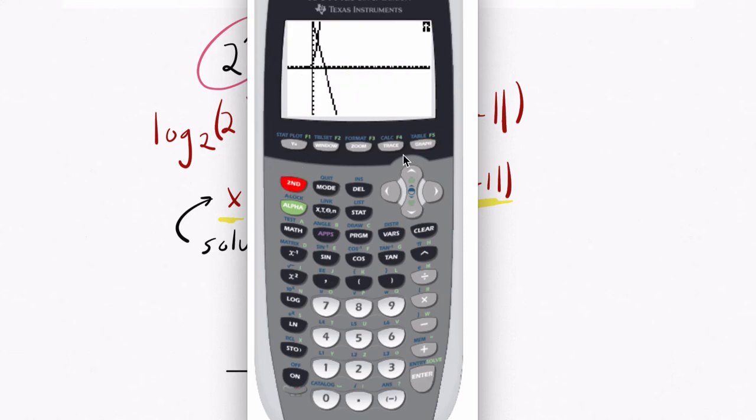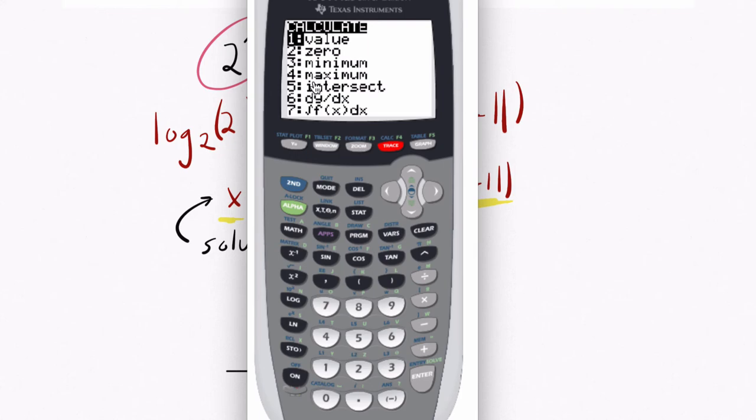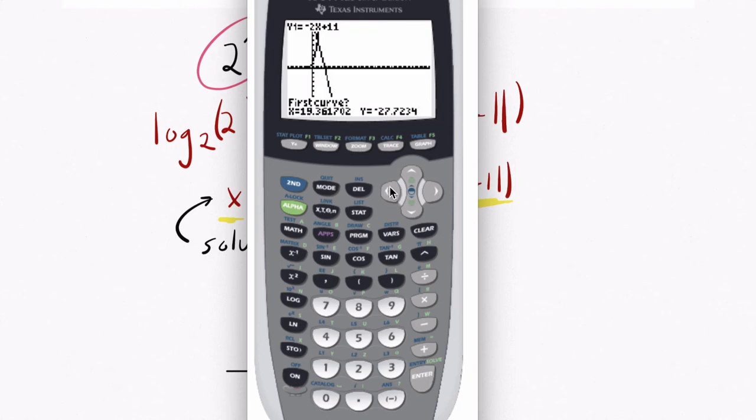So I go to second trace. Choice 5 is intersect. It's to my first curve and second curve. I can't see it right now because x is on 20. So let me pull this back a little bit here until we reach a situation where we can actually see the cursor. Oh, there it is.